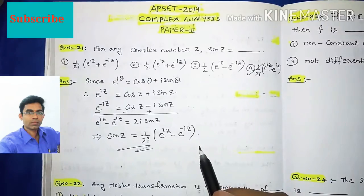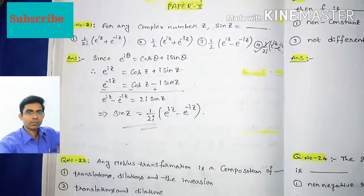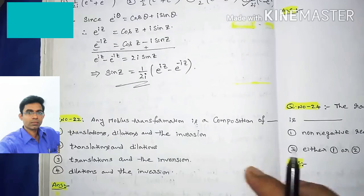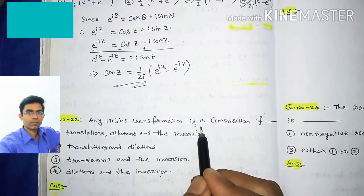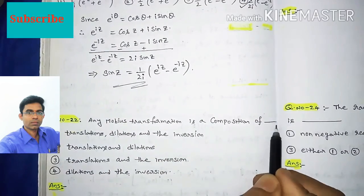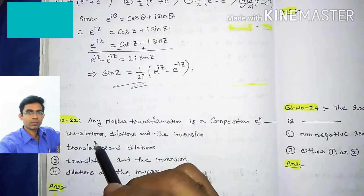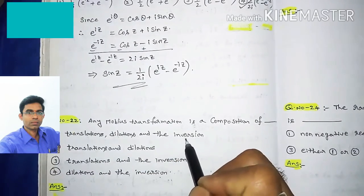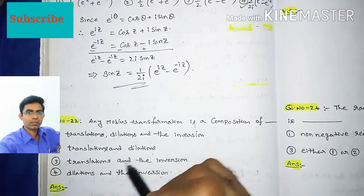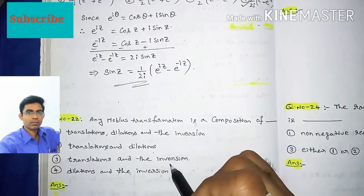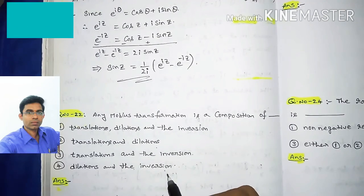Moving to question 22: Any Möbius transformation is a composition of what? The four options are: option 1: translations, dilations, and inversions; option 2: translations and dilations; option 3: translations and inversions; option 4: dilations and inversions.